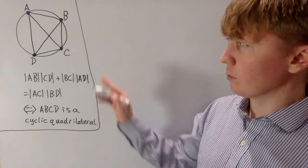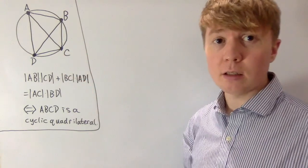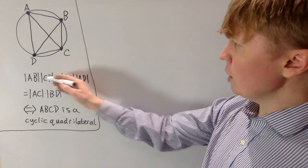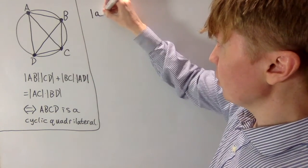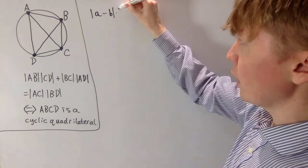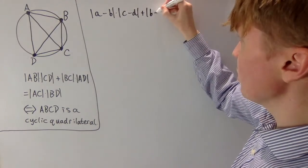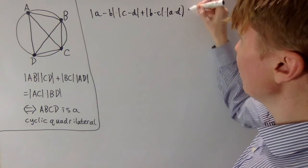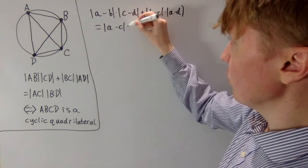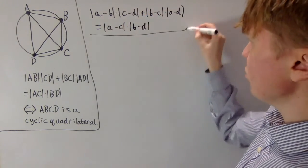So how are we going to get complex numbers involved to prove this? We think of points A, B, C, and D as corresponding to complex numbers in the complex plane. Using lowercase for our complex numbers, we want to show that the distance from A to B — written as |a − b| — times the distance from C to D, plus the distance from B to C times the distance from A to D, equals the product of distances along the diagonals: |a − c| times |b − d|.